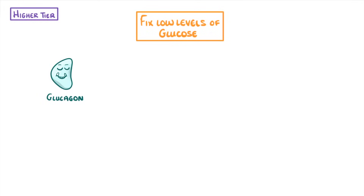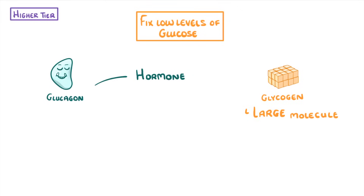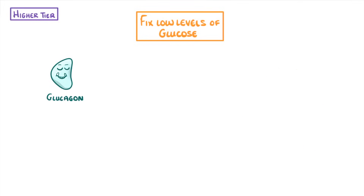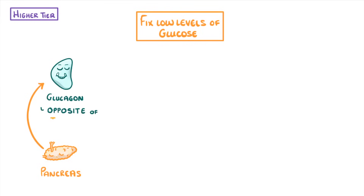Don't get glucagon confused with glycogen. Glucagon is a hormone, whereas glycogen is a large molecule made up of lots of glucose molecules. Just like insulin, glucagon is also released from the pancreas, but it actually does the opposite of insulin — which is to say that it increases blood glucose rather than decreases it.